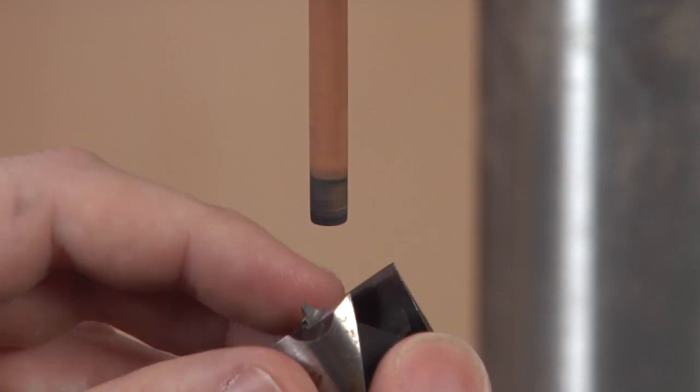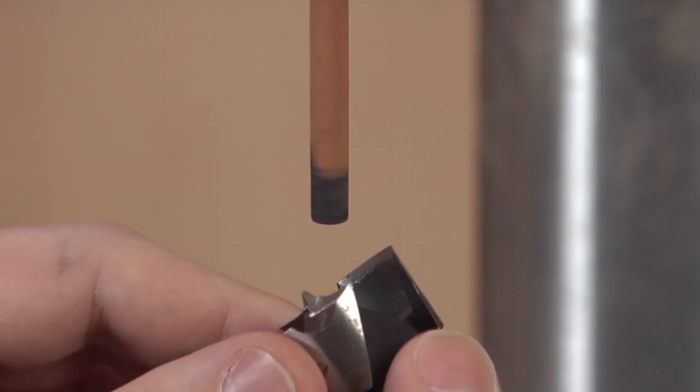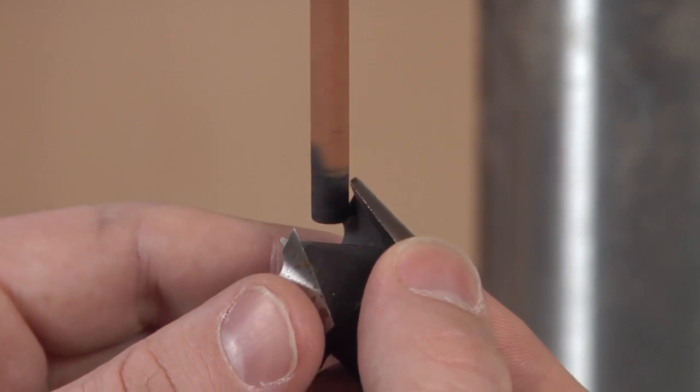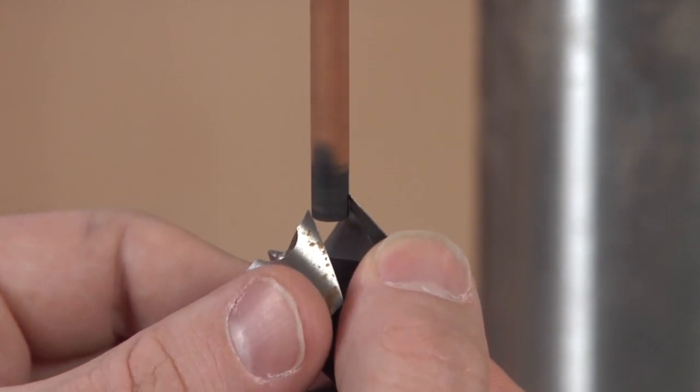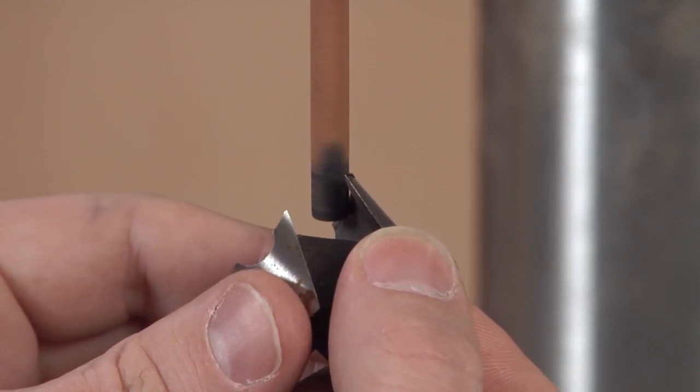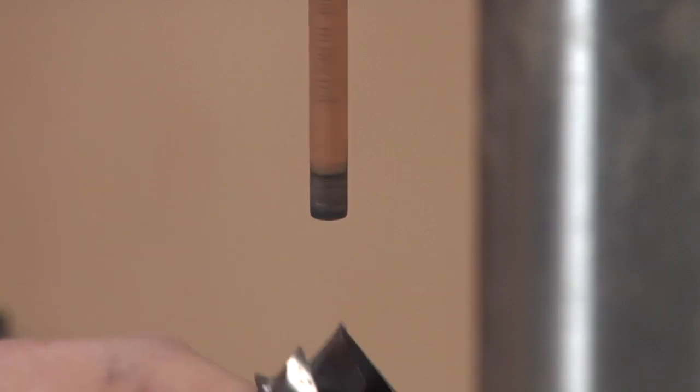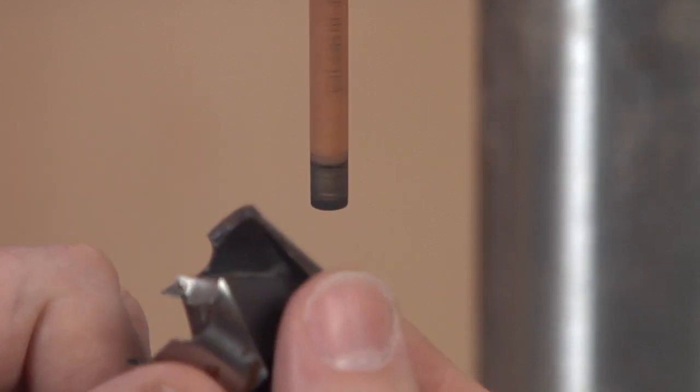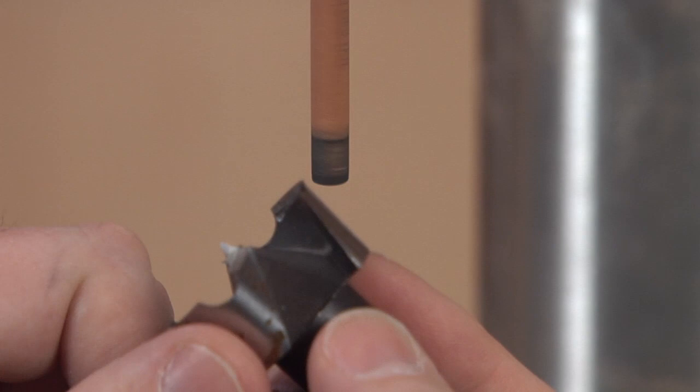You can check your progress on the rim to see where it's touching. You'll really only need a few strokes and you'll feel it sharpening up. Don't want to remove too much material.